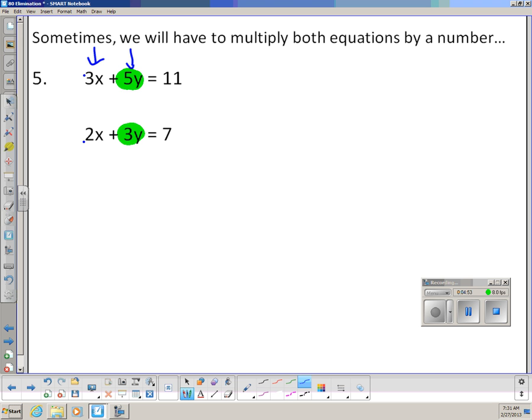Right now, 5 and 3 are not opposites. My goal is to create opposites. So here's what you can do. I can take the top equation and multiply it by the coefficient of the y on the bottom, which is a 3. And I'm going to do the same thing with the bottom equation. I'm going to multiply by the coefficient of the y on the top. So I'm kind of doing like a swapping here. Multiplying by 5 in the bottom, and I'm multiplying by 3 on the top. And then we're going to get a new system that's related to this old one.